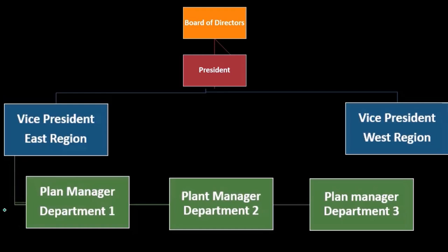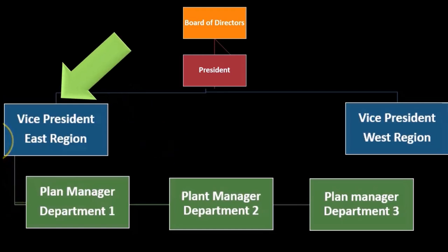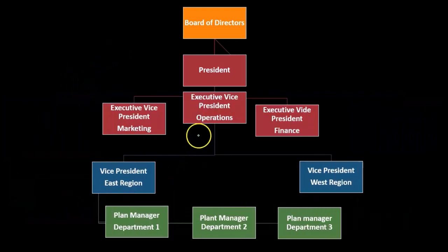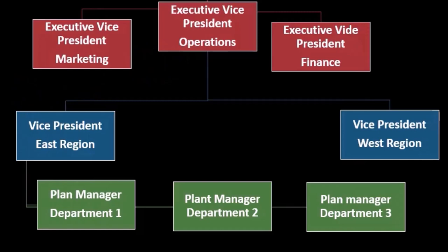The plant managers at the department level will have the controllable costs of their department. They will then be reporting to the vice president of the region, and the region has controllable costs which include the plant manager costs and so on, as we go up through the hierarchy.